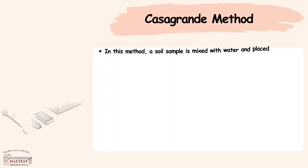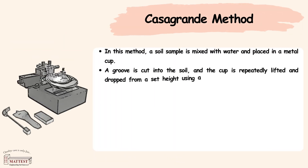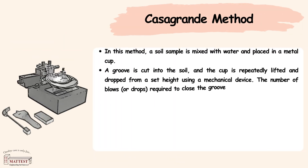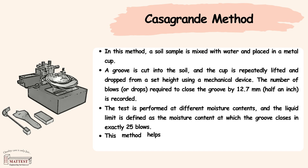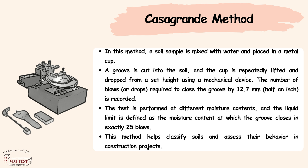Casagrande method: In this method, a soil sample is mixed with water and placed in a metal cup. A groove is cut into the soil and the cup is dropped repeatedly from a set height. The number of drops needed to close the groove of 12.7 mm is counted. The liquid limit is the moisture content at which the groove closes with exactly 25 drops.